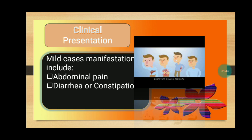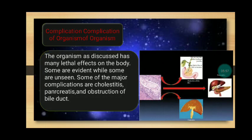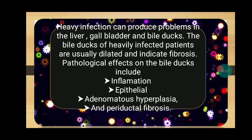This organism has many effects on our body. Mild cases include abdominal pain, diarrhea, or constipation. Some lethal effects include cholecystitis, pancreatitis, and obstruction of the bile ducts. Under severe infection, problems arise in the liver, gallbladder, and bile ducts. The bile ducts of heavily infected patients are usually dilated and indicate fibrosis. Pathological effects on the bile ducts include inflammation, epithelial adenomatous hyperplasia, and periductal fibrosis.